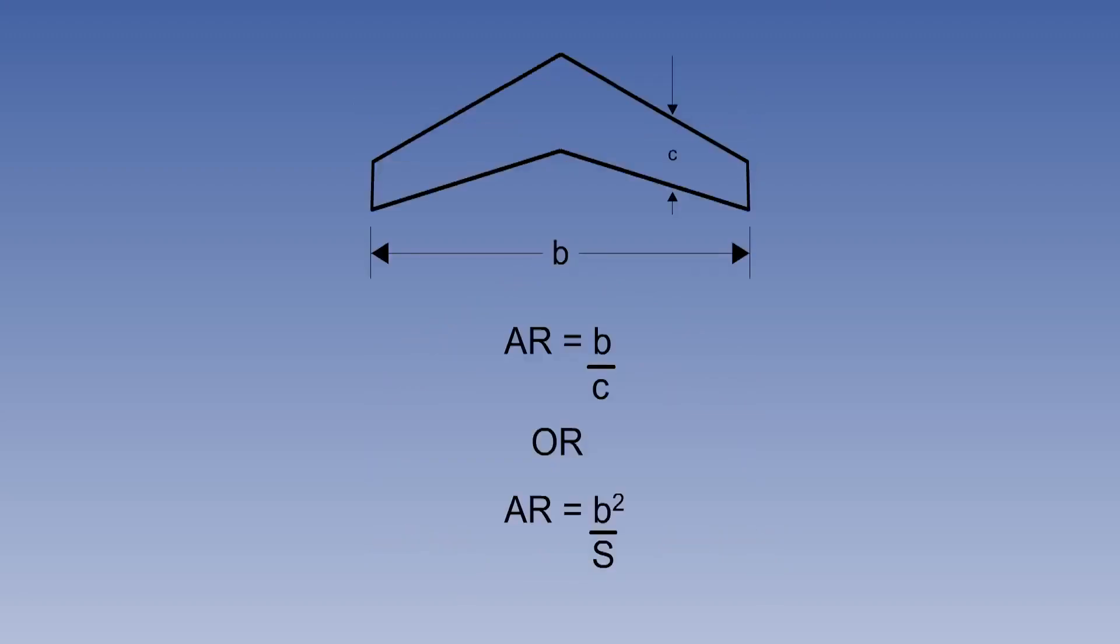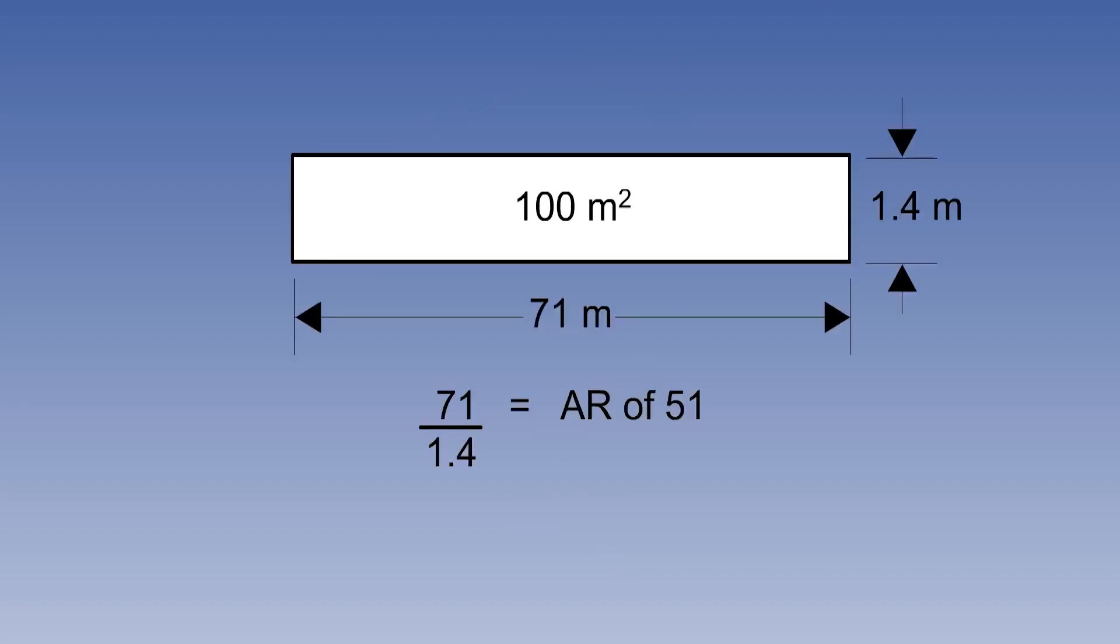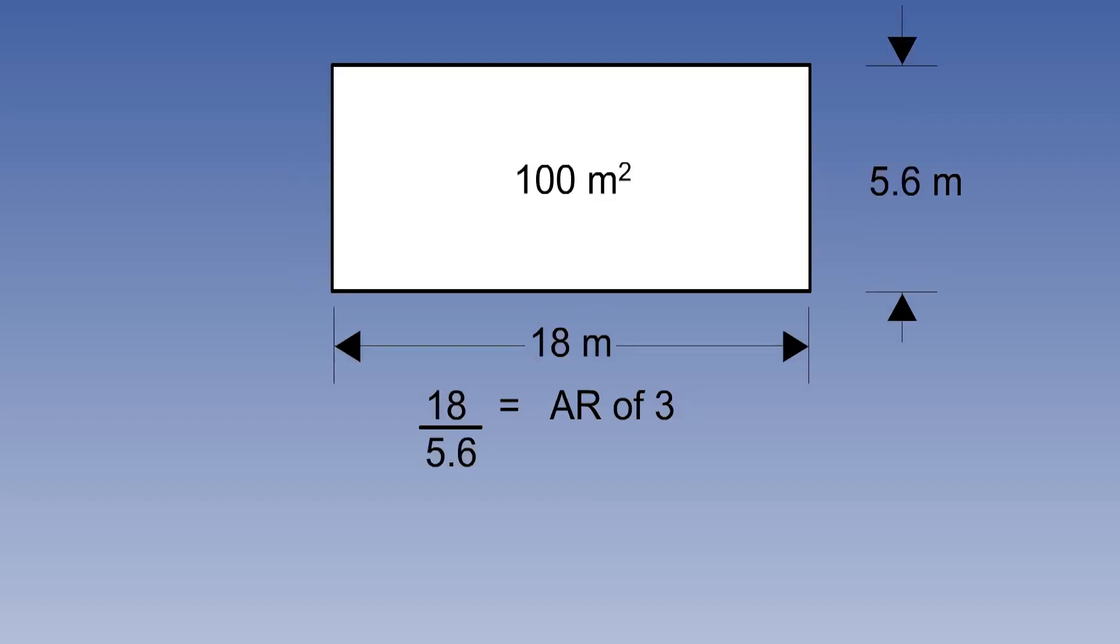The aspect ratio of the wing determines the aerodynamic characteristics and structural weight. For example, a wing area of 100 square metres could be arranged in a high aspect ratio, here 51, or a low aspect ratio of, say, 3. Typical ARs vary from this value for a modern combat aircraft through 12 for a high-speed jet transport to 35 for a high-performance sailplane.